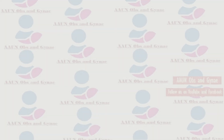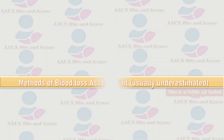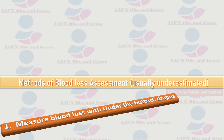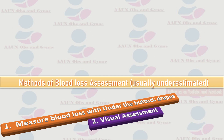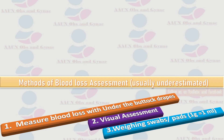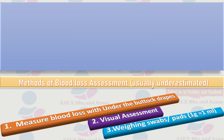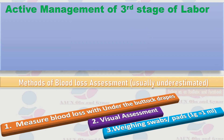Different methods of blood loss assessment are used, which are usually underestimated. These include: first, measuring blood loss with a drape under the buttocks; second, visual assessment; and third, weighing the swabs — one gram per pad equals one ml. The drug of choice in active management of third stage of labor is oxytocin 10 international units IV or IM.